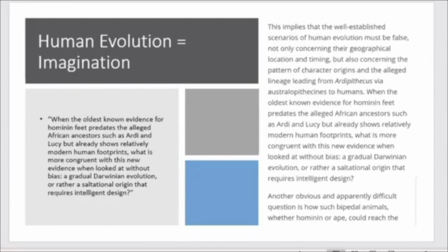I think this article on Evolution News puts it perfectly. They say, when the oldest known evidence for hominin feet predates the alleged African ancestors such as Ardi and Lucy but already shows relatively modern human footprints, what is more congruent with this new evidence when looked at without bias? A gradual Darwinian evolution, or rather a saltational origin that requires intelligent design?